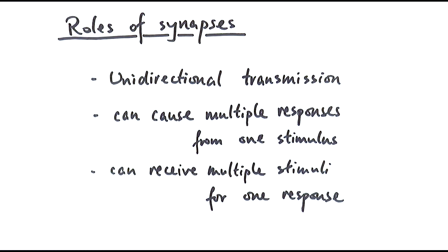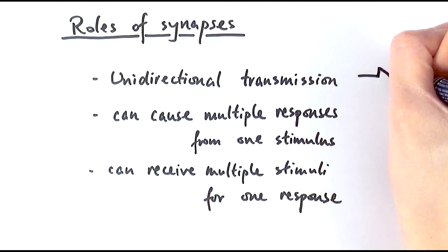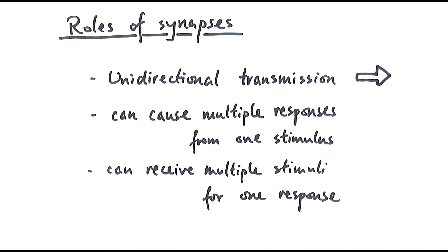First of all, think about the role of synapses. Why are synapses important? One thing is that we can ensure unidirectional transmission. What that means is that the action potential or nerve impulse is always transmitted along in a single direction. It's always going from the sensory neuron to the relay, then to the motor neuron, and not going in the opposite direction where it goes from motor back to sensory.